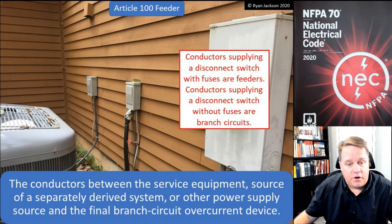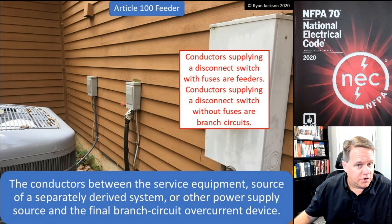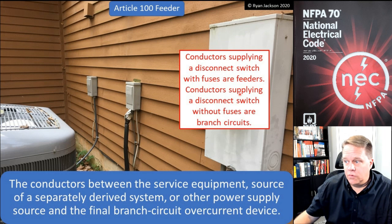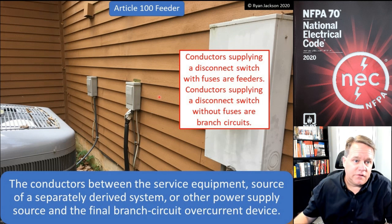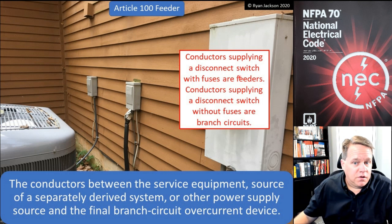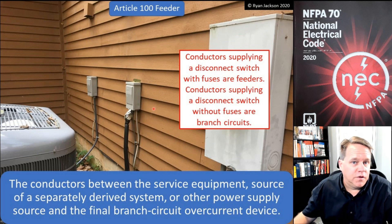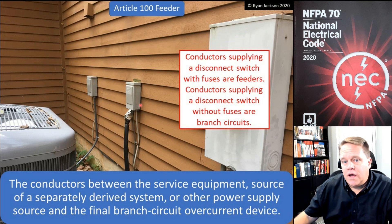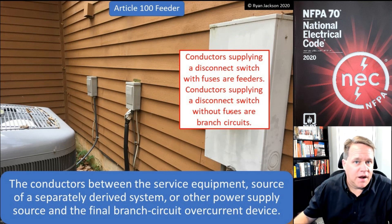Here I've got a panel board on the right and some disconnects for my air conditioners. Is the run from the panel to the disconnect a feeder circuit or a branch circuit? It starts at a breaker or fuse, so it's either one. What does it end at? If it ends at a breaker or fuse, it's a feeder. But if these disconnects don't have fuses — say it's just a pull-out disconnect — then this would be a branch circuit, starting from the panel, feeding the non-fused disconnect, and going through to the utilization equipment.